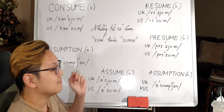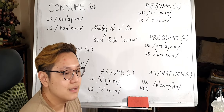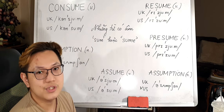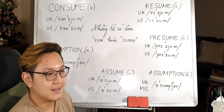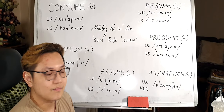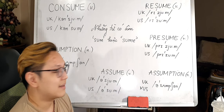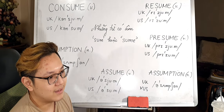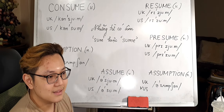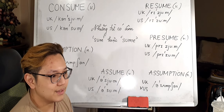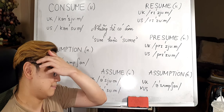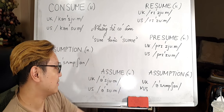So 'assume' means: you do not have evidence about something, but you still believe in it and think it is correct. Cái từ 'assume' là mình không có bằng chứng gì hết, nhưng mà mình vẫn tin tưởng một điều gì đó, coi như nó đúng. You assume that it's right even though you don't have any evidence at all.